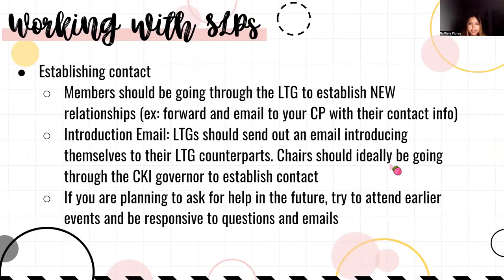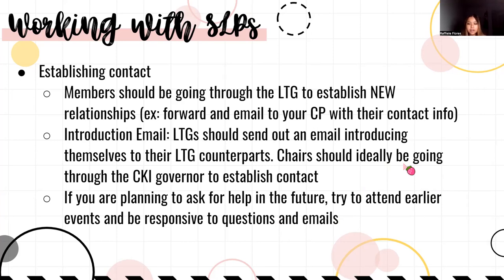For establishing contact, members should go through the LTG to establish new relationships. This could be contacting your CP or sending an introduction email. LTGs should send out an email introducing themselves to their LTG counterparts, and chairs should do the same through the Circle K governor. If you plan to help in the future, try to attend earlier events and be responsive to questions and emails — like attending Key Club DCMs, conferences, and similar events.